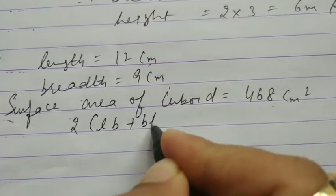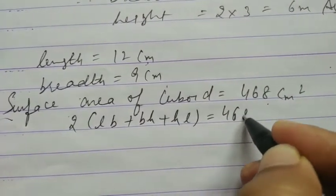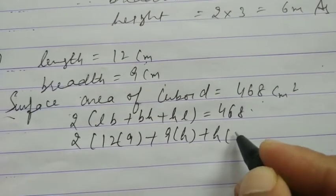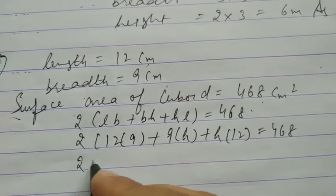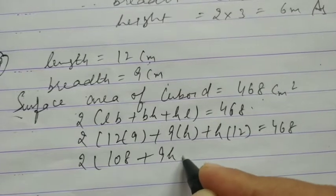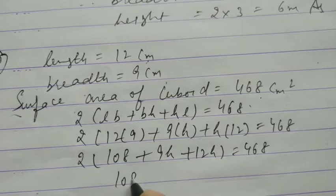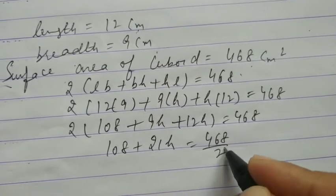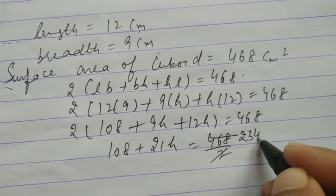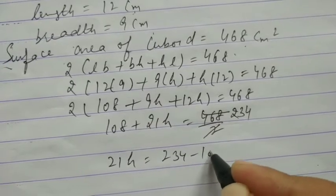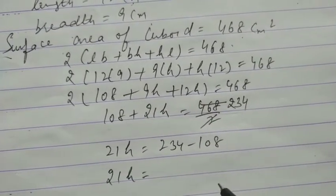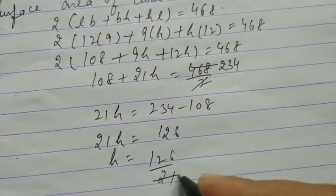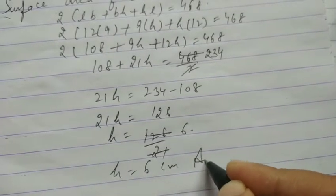The formula of surface area is 2 times (LB + BH + HL), equal to 468. L is 12, breadth is 9, height is H. 12 into 9 is 108, then 9H plus 12H. So 108 plus 21H. Dividing both sides by 2: 234 minus 108 equals 126. Then 126 divided by 21 is 6. So height is 6 cm.